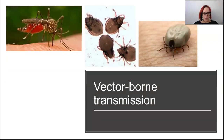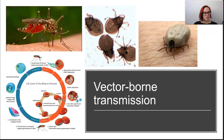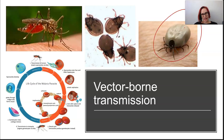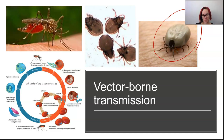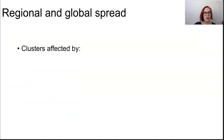Vector-borne transmission involves vectors — animals capable of transmitting disease such as fleas, mites, ticks, rats, and dogs. The organism itself might be the pathogen, or the vector might just be carrying the pathogen. This adds an extra dimension because vectors can travel really large distances.